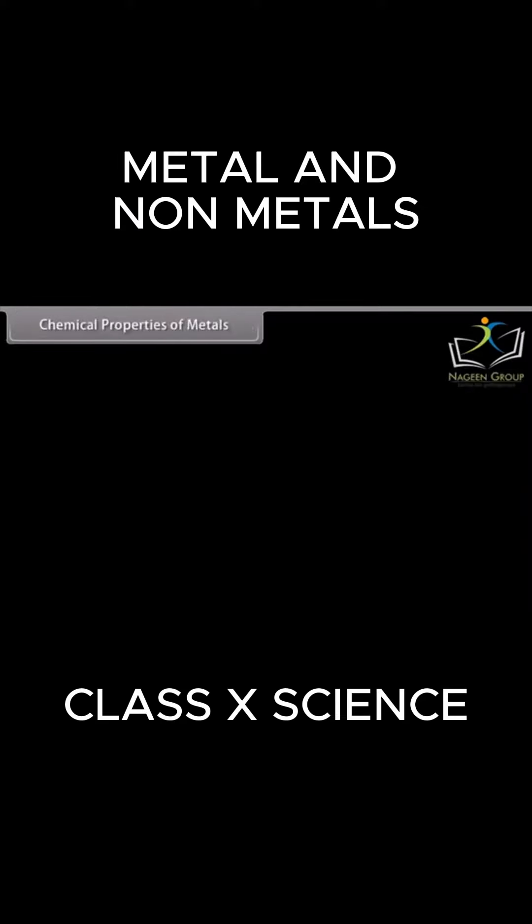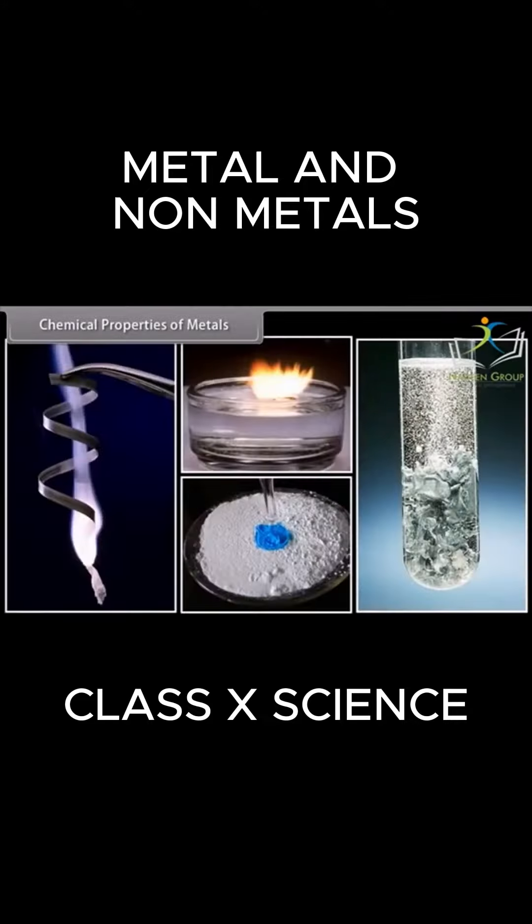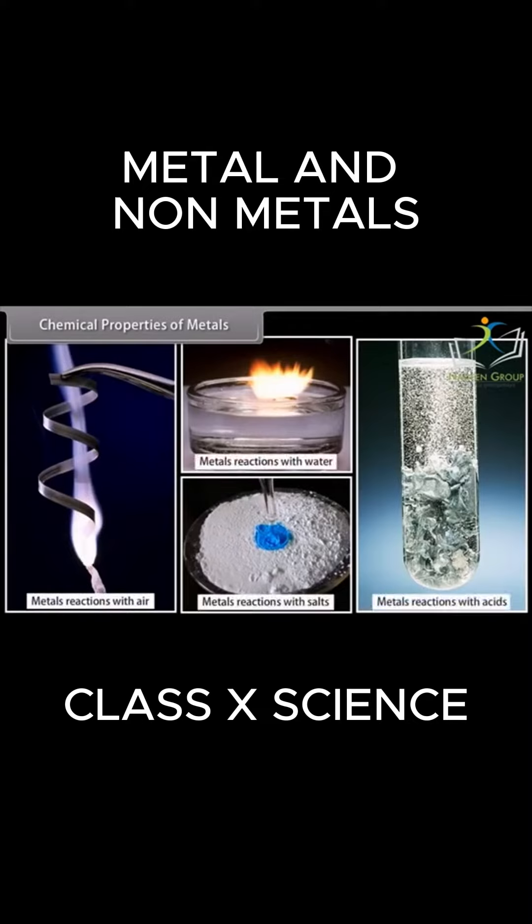Chemical properties of metals. Let us look at some chemical properties of metals. These properties include reactions of metals with other elements, that is, air, water, acids, and other metal salts.